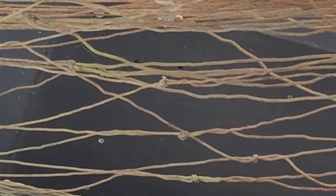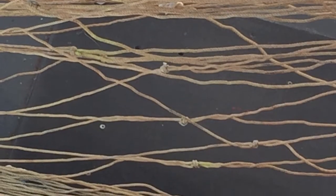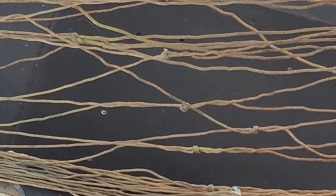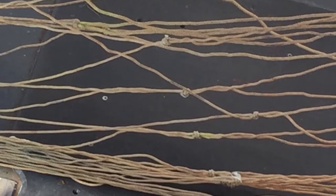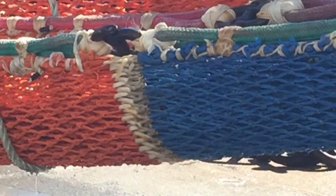The net's mesh has large openings at the beginning allowing huge volumes of water to pass through it while herding the fish down the net where the mesh becomes increasingly smaller until you reach the cod end.